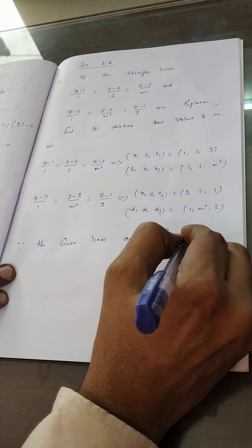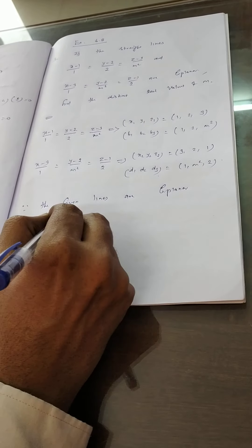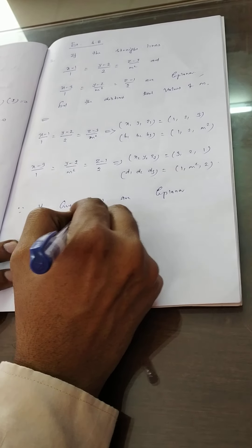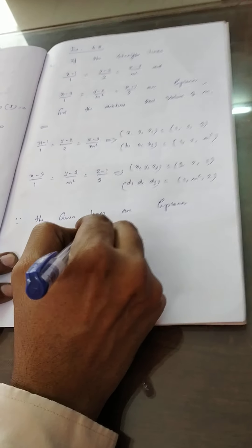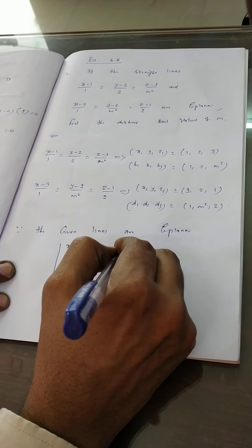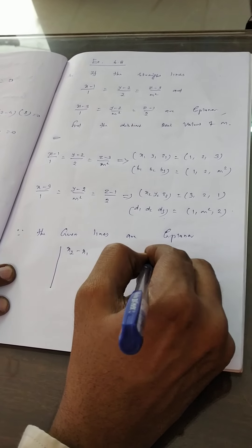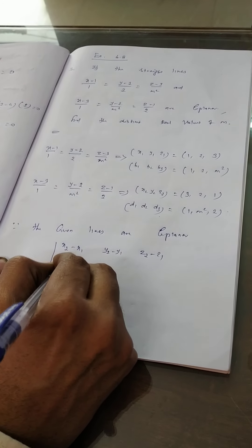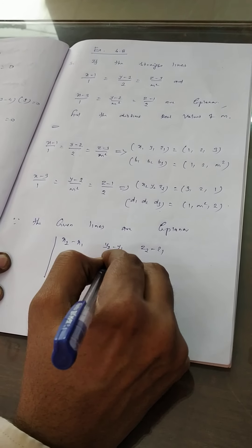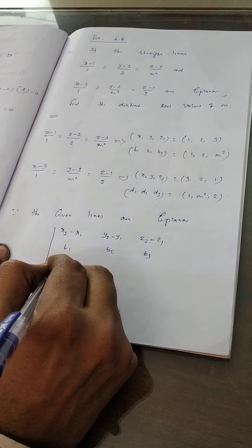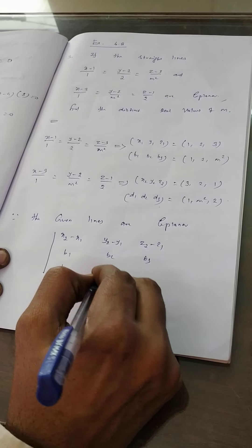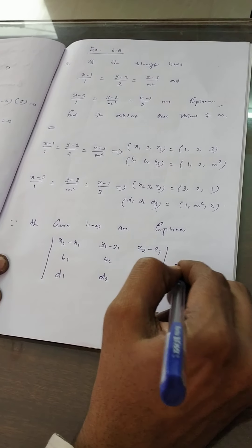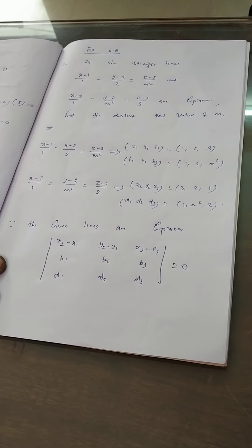Since the given lines are coplanar, the coplanarity condition is: the determinant of (x2−x1, y2−y1, z2−z1), (b1, b2, b3), (d1, d2, d3) is equal to 0.